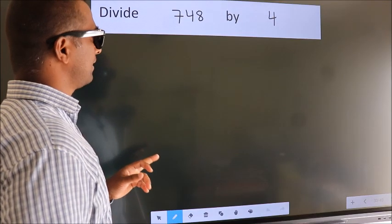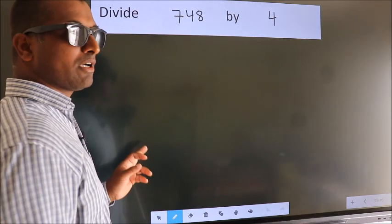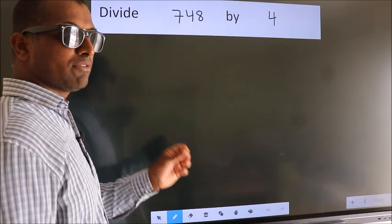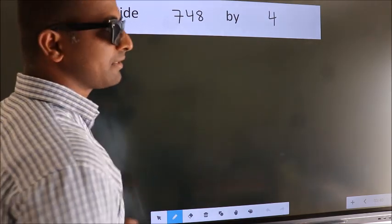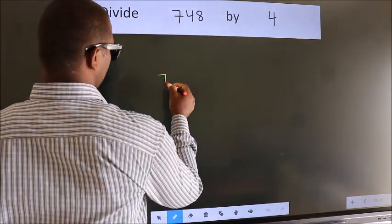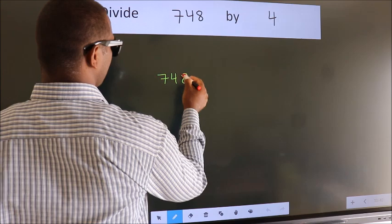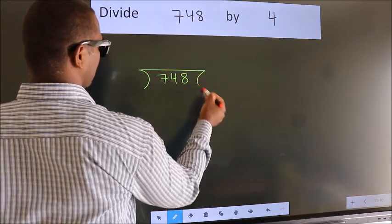Divide 748 by 4. To do this division, we should frame it in this way: 748 here, 4 here.